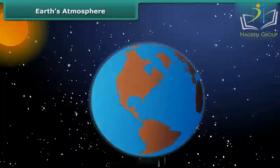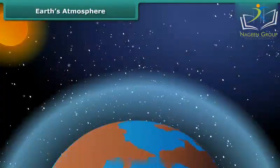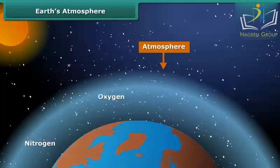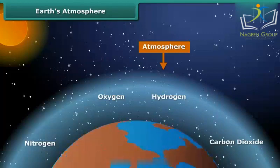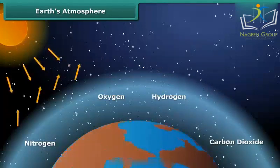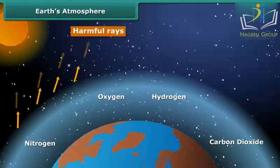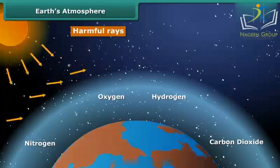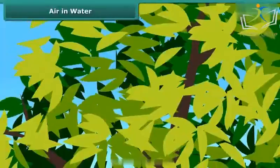Our earth is surrounded by a blanket of several gases called the atmosphere. This atmosphere contains mainly nitrogen, oxygen, hydrogen, and carbon dioxide, along with some other gases. The atmosphere protects us from harmful rays that can come from the Sun, and plays a very important role in regulating the temperature of earth in order to sustain life on it.